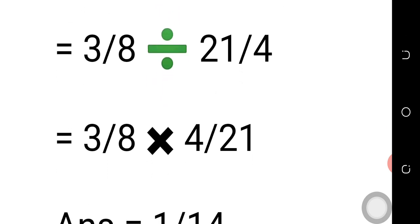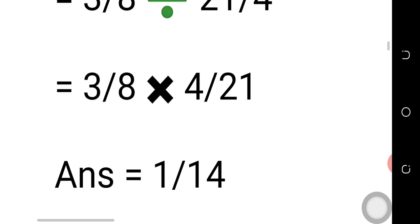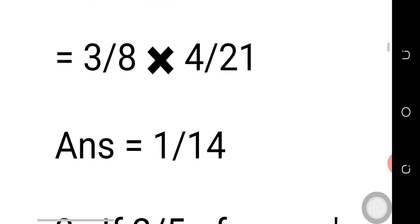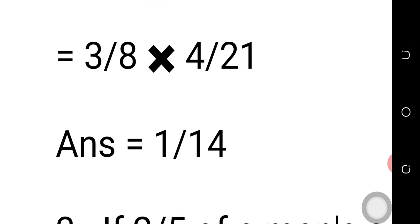Three over eight divided by twenty-one over four. Division turns to multiplication as I said earlier: three over eight times four over twenty-one. Four can cancel four — four into eight is two. Three into twenty-one is seven. So at the end of the day we get one over fourteen as our answer.